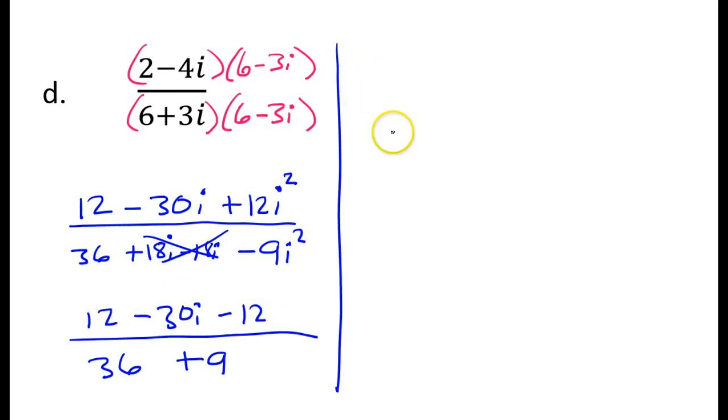Oh, look, 12 minus 12. That actually cancels out. That's interesting. So those are gone. So in the numerator, I just have negative 30i. And in the denominator, I have 45.